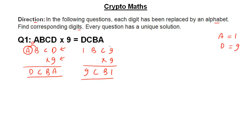Nine multiplied by 9 is 81, and 8 is carried to the next place. Now think of B. Look at this — there is no carry here, carry is 0. So B is a digit which gives 0 carry. There are only two possibilities: 0 and 1. It cannot be 2 because 9 times 2 is 18. So B can only be 0, because 1 is already assigned to A. This gives us B equals 0.